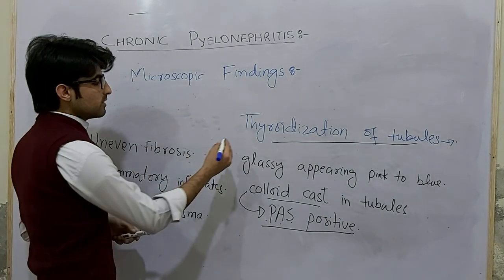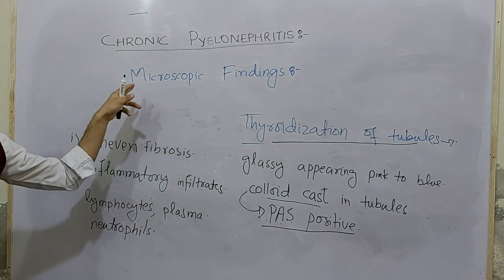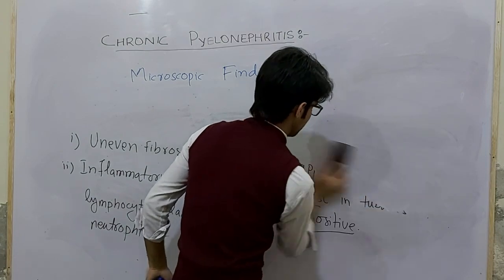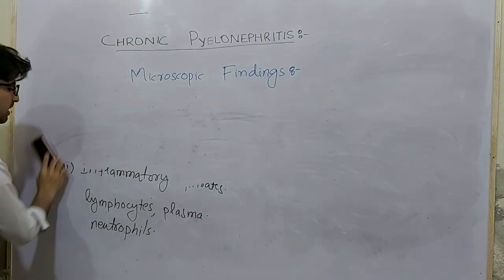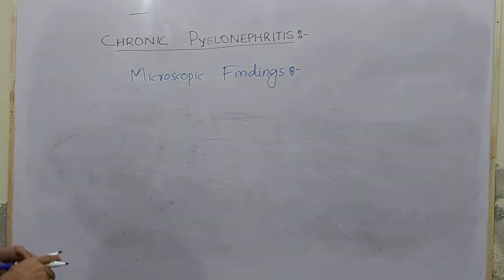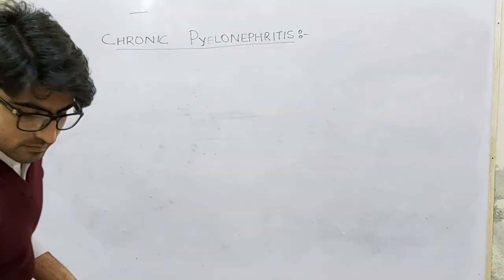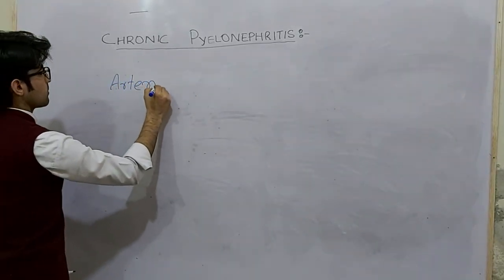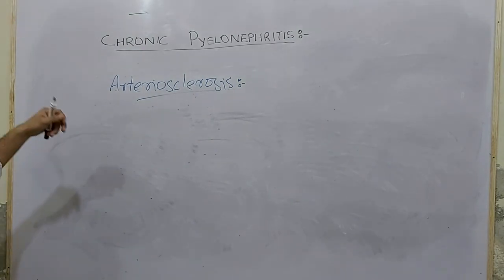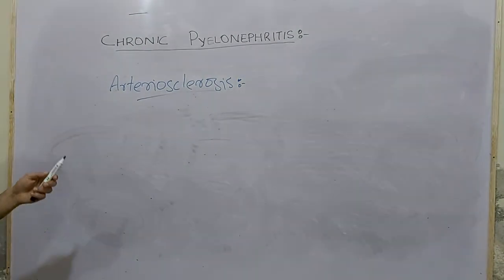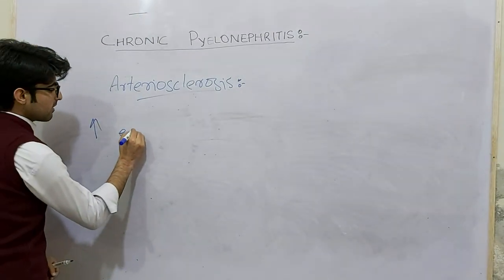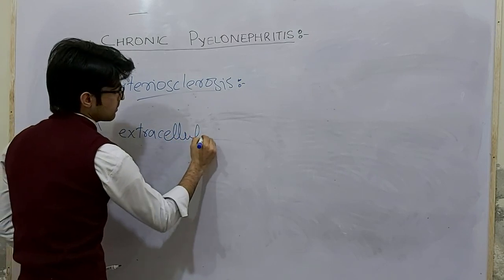This thyroidization change is a hallmark of chronic pyelonephritis. The next finding is arteriosclerosis. This occurs because the fibrosed kidney cannot effectively filter blood, leading to increased extracellular volume.